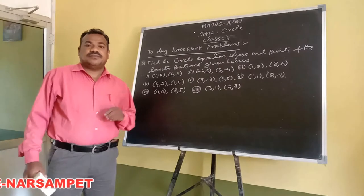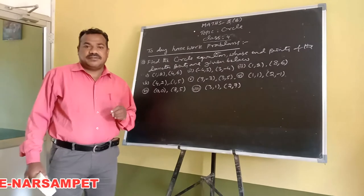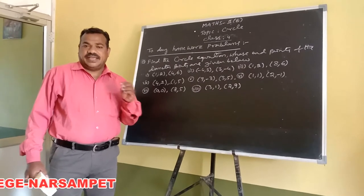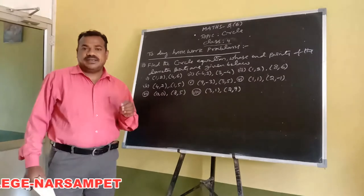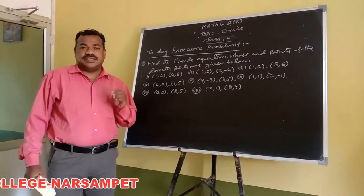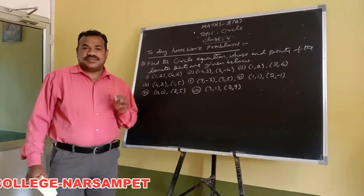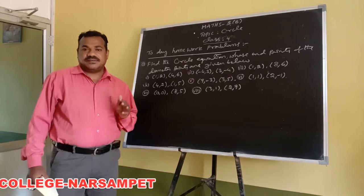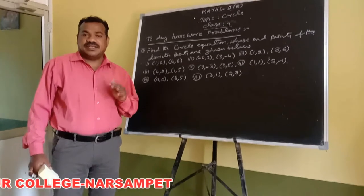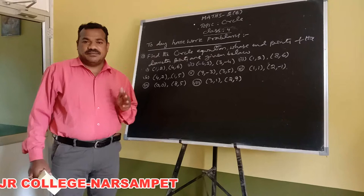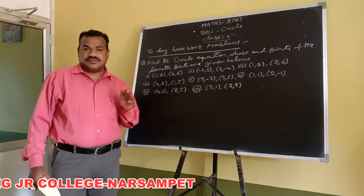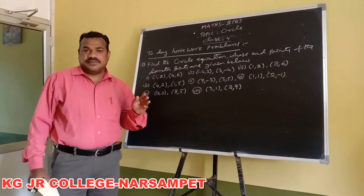The equation of the circle with endpoints of the diameter (x1, y1) and (x2, y2) is given by: x² + y² − (x1 + x2)x − (y1 + y2)y + x1·x2 + y1·y2 = 0.